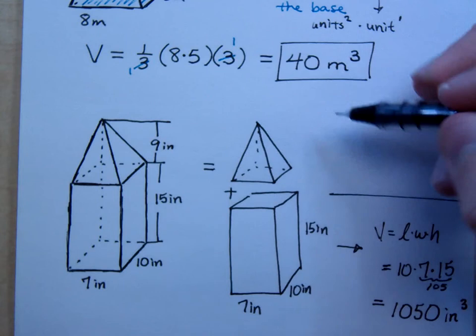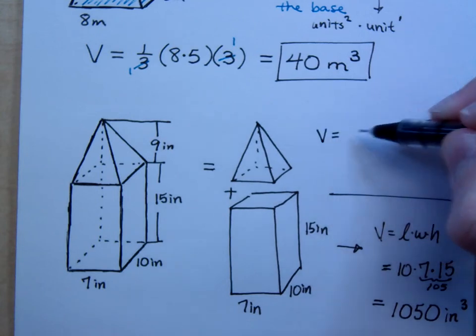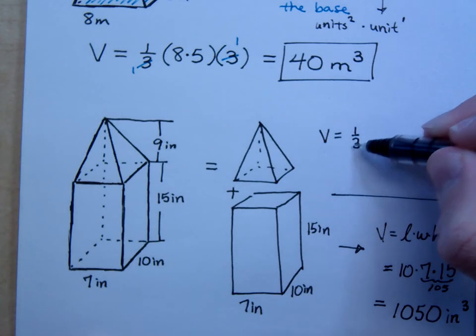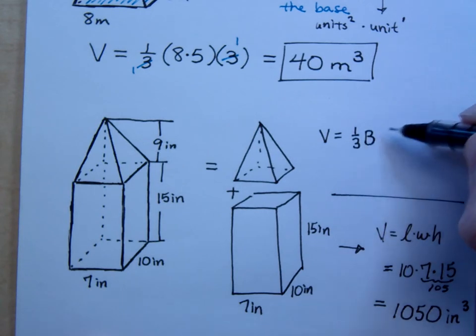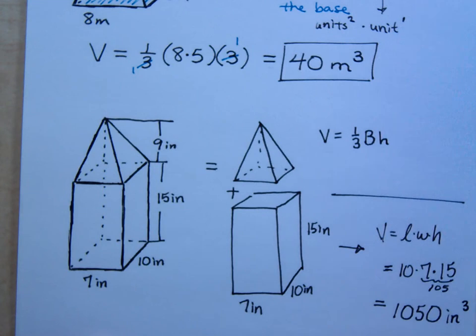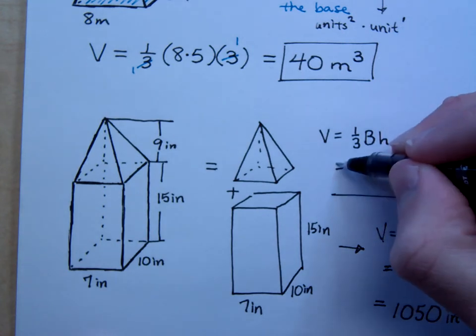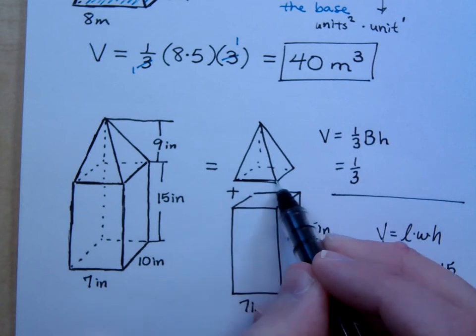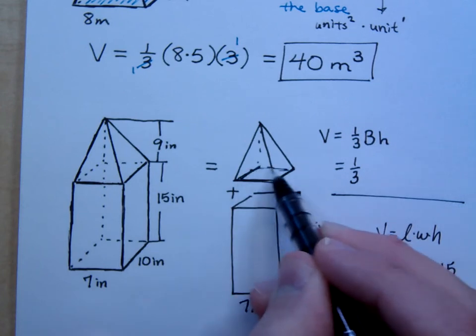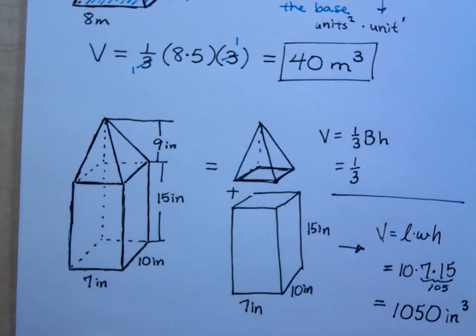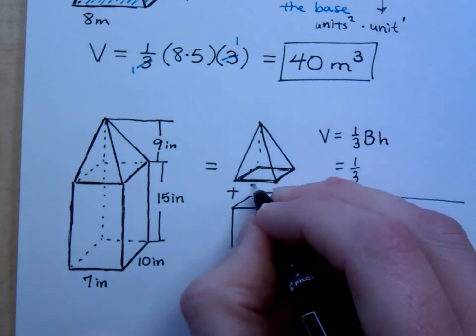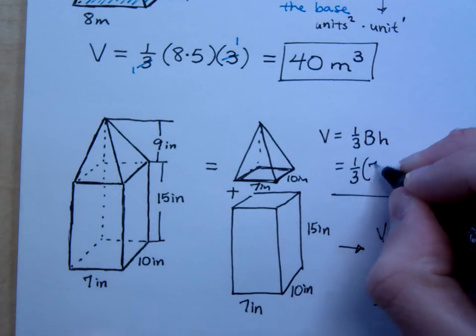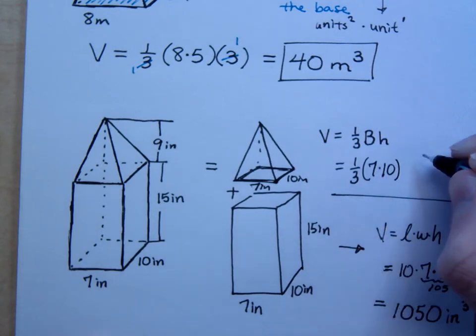Well, what about this pyramid? What's the volume for the pyramid? Not 1 half. That's 1 third. The area of the base times the height. Now, 1 third. How would you find the area of the base of this pyramid? 7 times 10. Right, this is a 7, and this is 10. So, that's going to be in here as 7 times 10. And what's the height?